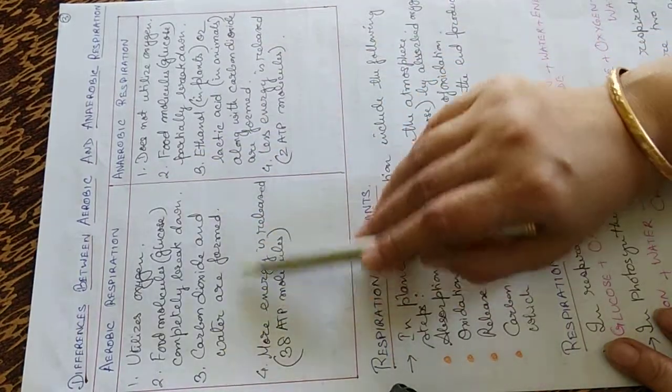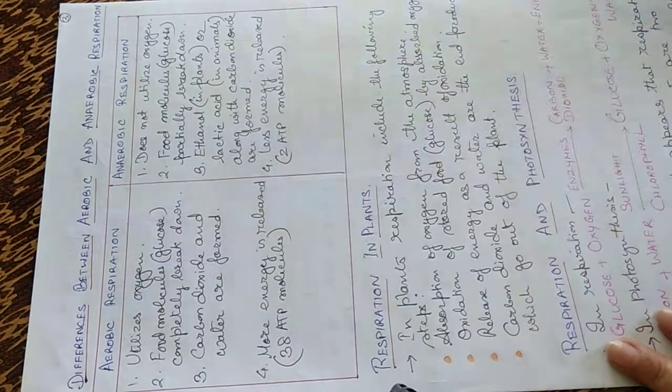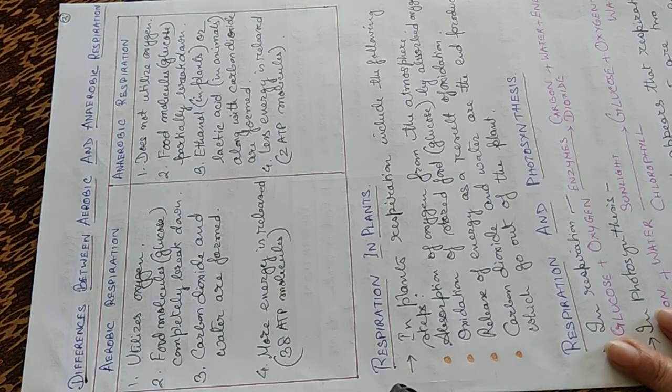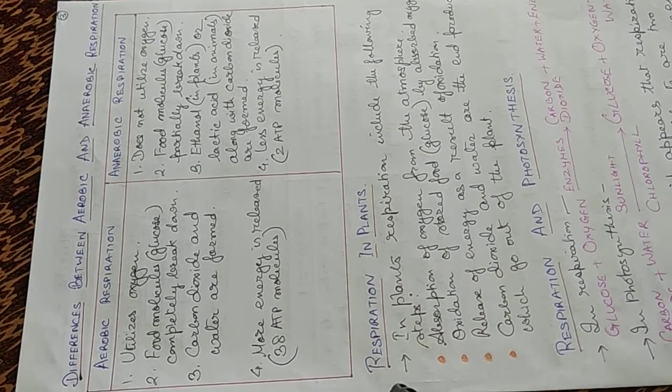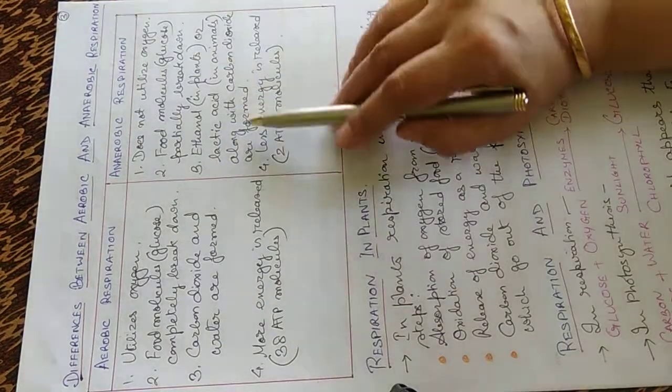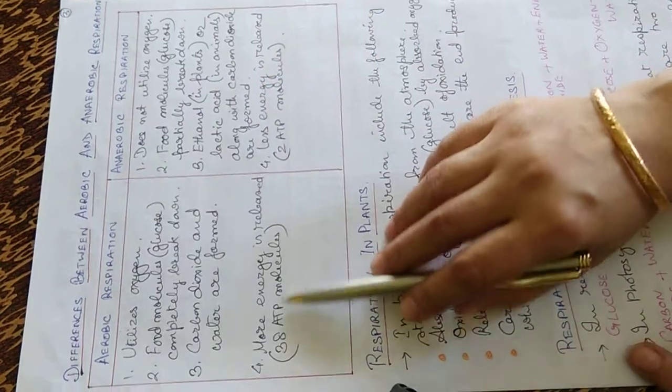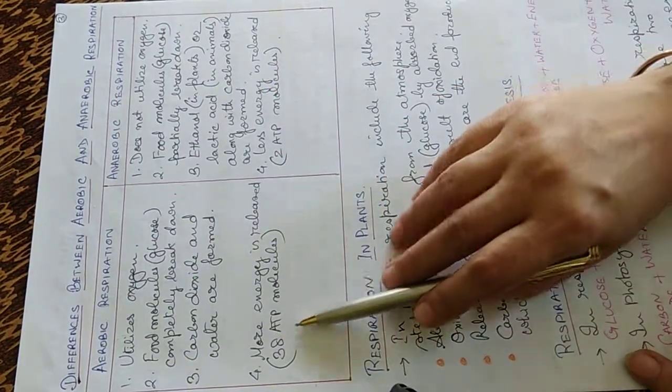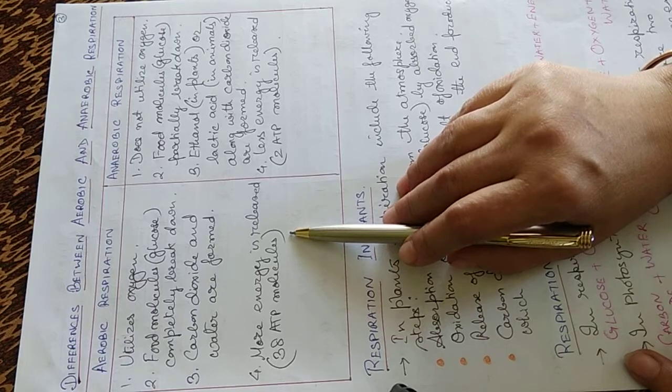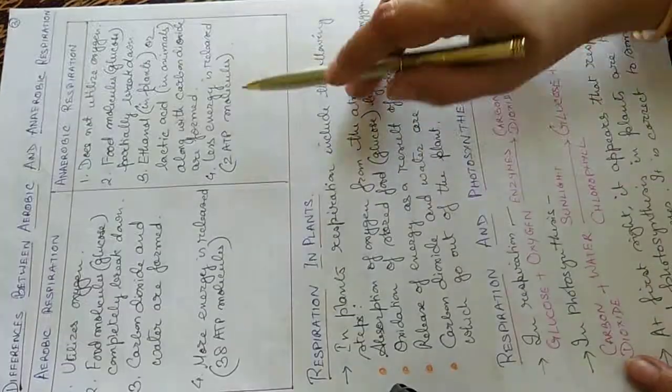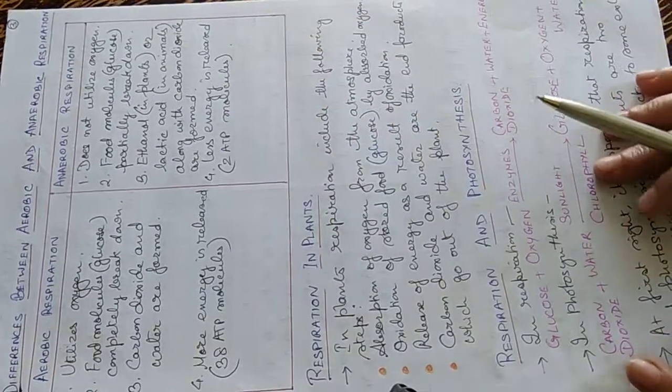Carbon dioxide and water is formed in case of aerobic and in case of anaerobic, ethanol in plants and lactic acid in animals along with carbon dioxide are formed. More energy is released, 38 ATP molecules in case of aerobic and only two ATP molecules is released in anaerobic respiration.